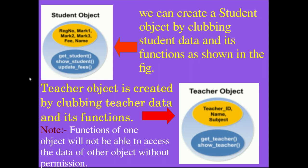For example, a student is an object, and a teacher is another object. For the student object, the common properties — which are the data — include register number, marks, fees, and name. The functions associated with the student object include get student details, show student, and update fees. So data and functions are clubbed together into a combined unit called an object.